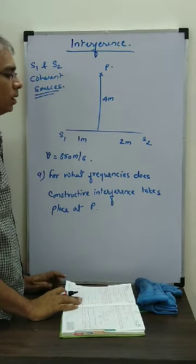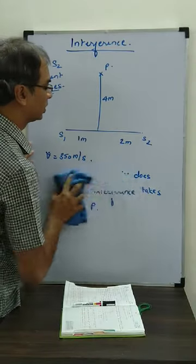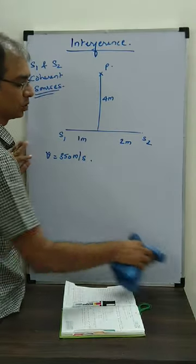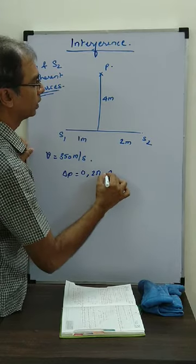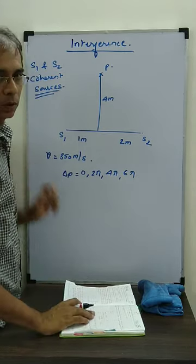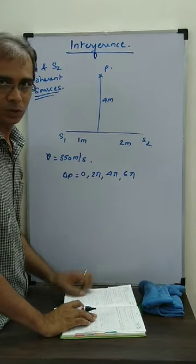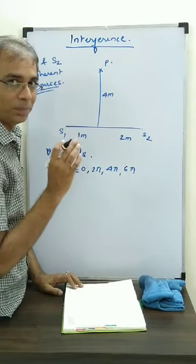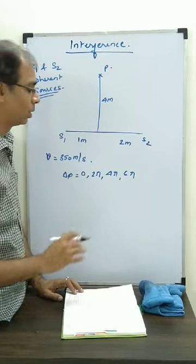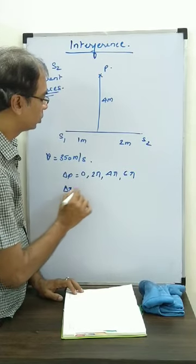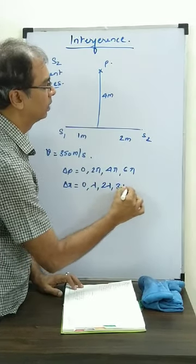If I want to know path difference, because delta phi is a function of path difference when the two sources are coherent, for constructive interference delta x should be 0, lambda, 2 lambda, 3 lambda, and so on. The sound is going to move from S1 to P and from S2 to P. The distance S2P, considering a right angle triangle, is the hypotenuse, so it is root of 4 squared plus 2 squared, which is root 20. Similarly, the other distance is root of 4 squared plus 1 squared, which is root 17.